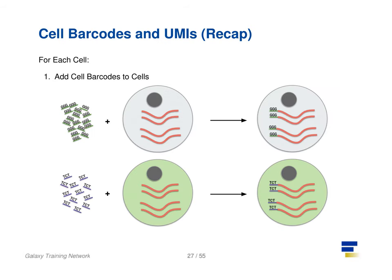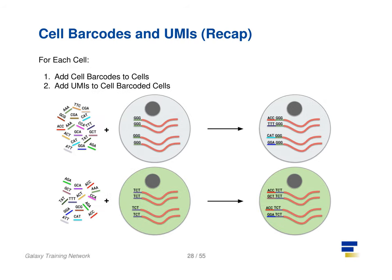So let's recap what we've learned: first, each cell has cell barcodes added to each RNA molecule. Then we add random UMIs to all transcripts, which further tag the molecules. These can then be used to deduplicate the transcripts after amplification.